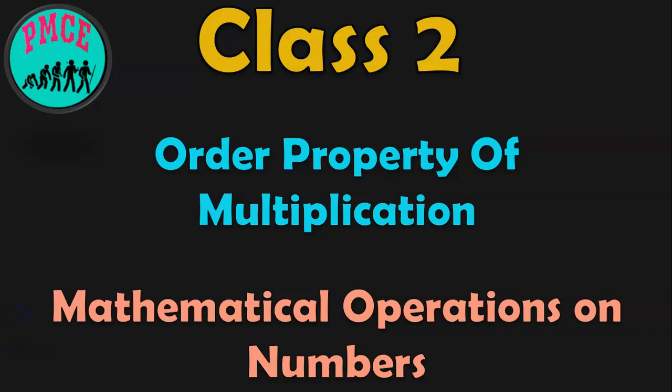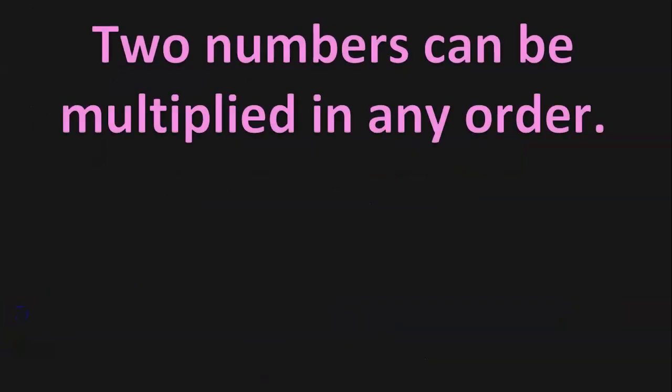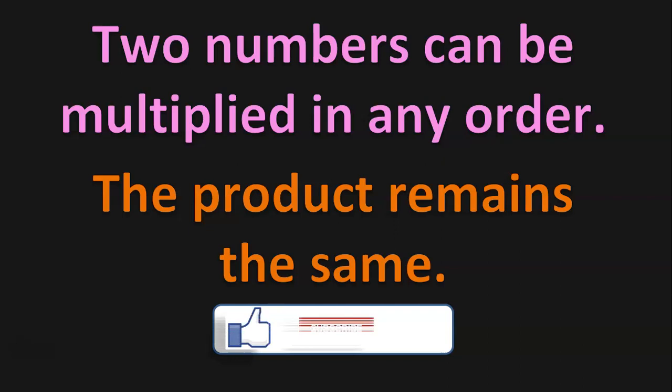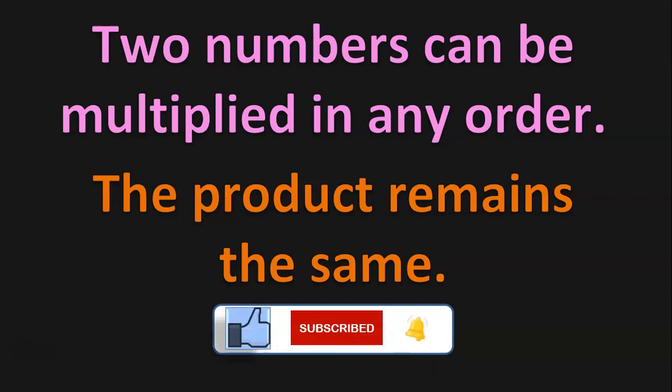Let us see what the order property of multiplication means. Two numbers can be multiplied in any order. The product remains the same.